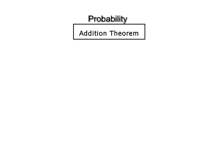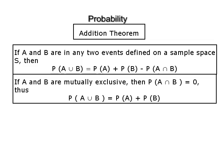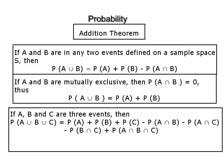Addition theorem. If A and B are two events defined on the same sample space S, then P(A ∪ B) = P(A) + P(B) − P(A ∩ B). If the events A and B are mutually exclusive, then P(A ∪ B) = P(A) + P(B). In case of three events A, B and C: P(A ∪ B ∪ C) = P(A) + P(B) + P(C) − P(A ∩ B) − P(B ∩ C) − P(A ∩ C) + P(A ∩ B ∩ C).